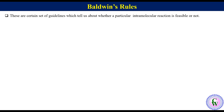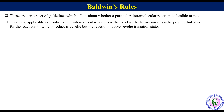Baldwin's Rules are a certain set of guidelines which tell us about whether a particular intramolecular reaction is feasible or not. These rules are applicable not only for intramolecular reactions that lead to the formation of a cyclic product, but also for reactions in which the product is acyclic but the reaction involves a cyclic transition state. This we will discuss later with examples.